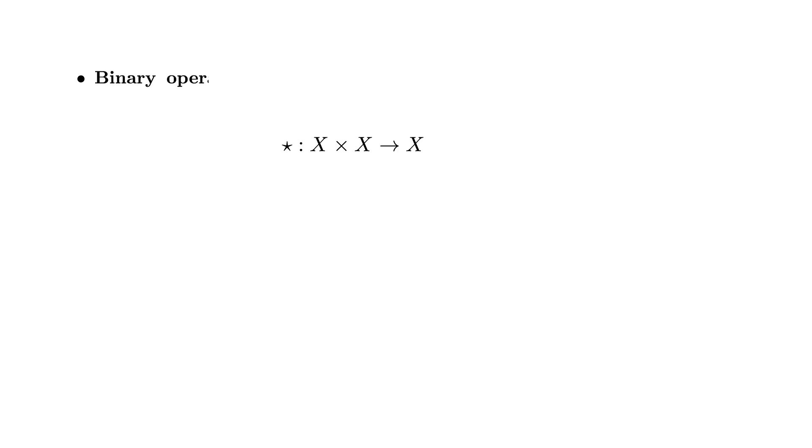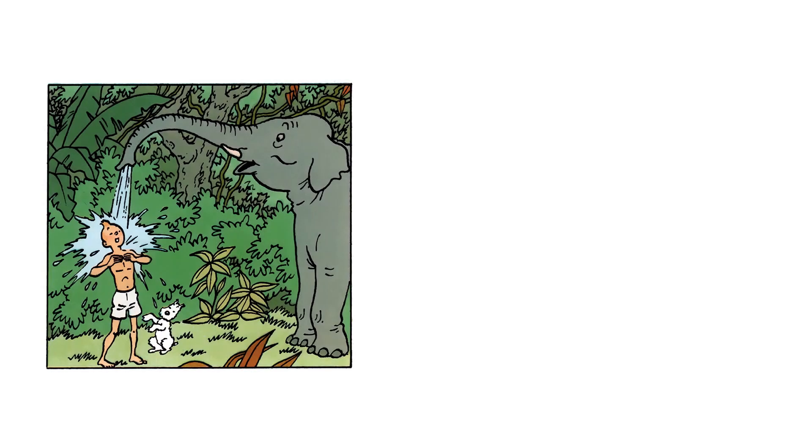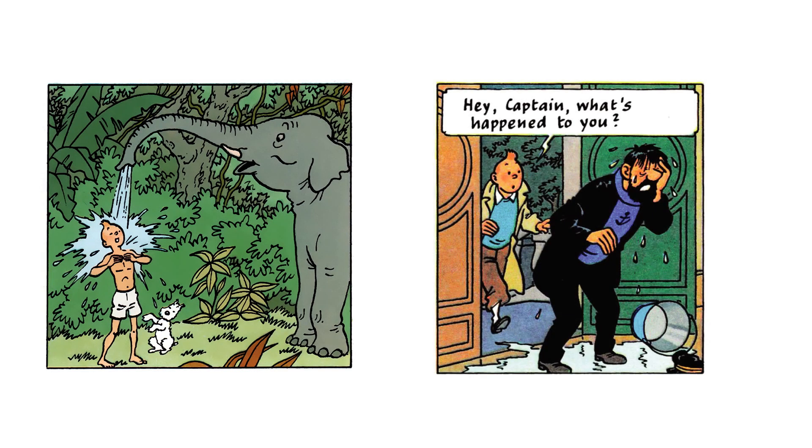A binary operation on a set X is a particular kind of function that assigns to an ordered pair of elements of X a third element of X. When we say ordered pair, it means that one of the elements comes first, the other second, and if we change the order, we may get a different result. This is not a very abstract idea. Just think of the difference between undressing and then taking a shower as opposed to taking a shower and then undressing.